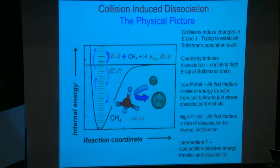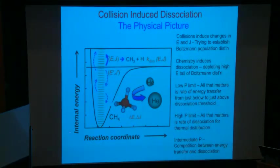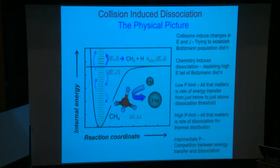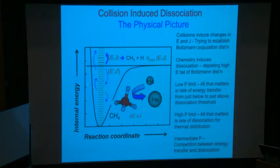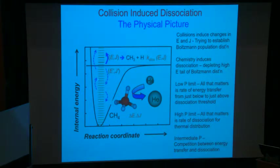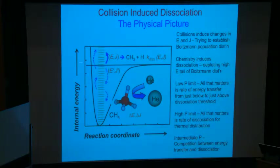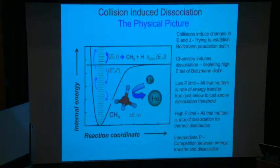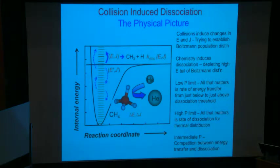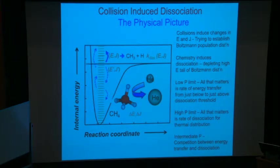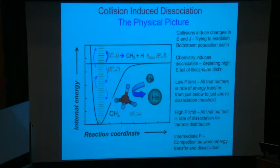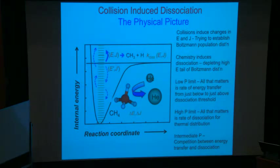Let's think about the physical picture. Imagine a methane molecule sitting in a helium bath gas. We start at the bottom of the well; the methane collides with helium and gets excited up a little, then another collision brings it up more, then maybe down a little — it goes up and down. Every once in a while one of these molecules will happen to get above the dissociation threshold. Once above the threshold, it has a new option: instead of just vibrating, it can kick off one H to give H plus methyl. The whole dissociation process is a competition between this energy diffusion up and down and the dissociation process.